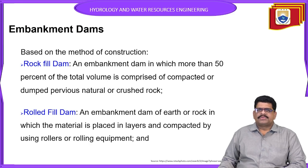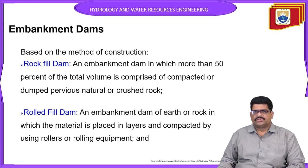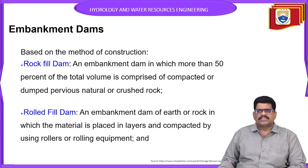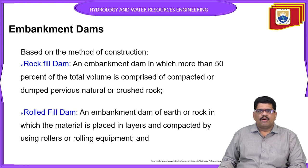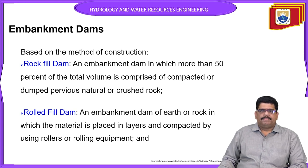Earthen dams can be classified based on the method of construction into two types. The first one is rock-filled dams. A rock-filled dam is one in which more than 50 percent of the total volume is comprised of compacted impervious natural or crushed rocks — we call it a rock-filled dam.